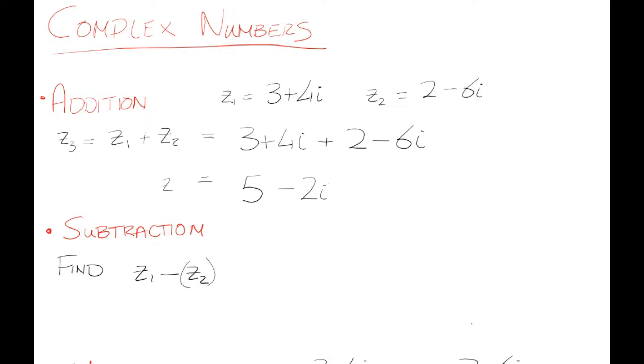What about subtraction? One thing that will help you is using brackets to replace the variable. So z1 is 3 + 4i, minus z2 with brackets: 2 - 6i. When we tidy this up we have 3 + 4i - 2, but a minus by a minus 6 gives plus 6i. When you bring these like terms together you have 3 - 2 = 1, and 4i + 6i = 10i.